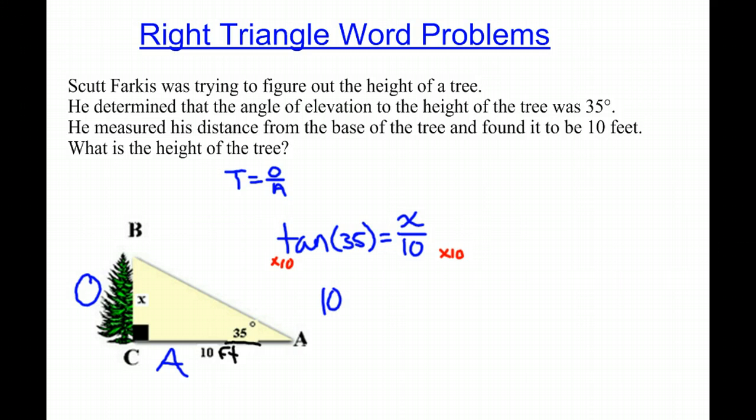So 10 tangent of 35 will equal our X. If we use our calculator to find this, we get that tangent of 35 is roughly 0.7.